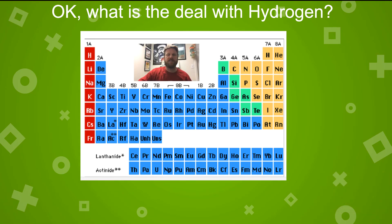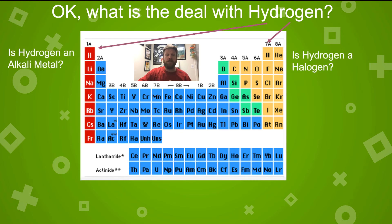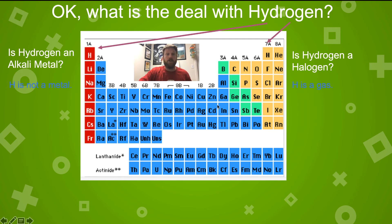The last thing to talk about is the placement of hydrogen on the periodic table. On this table, hydrogen is placed above group 1, the alkali metals, and also above group 17, the halogens. So is hydrogen an alkali metal or a halogen? Well, hydrogen is not a metal — hydrogen is a gas. It seems a bit odd to place it above the alkali metals. However, hydrogen only has one valence electron, like all the alkali metals — it does not have seven valence electrons like the halogens.